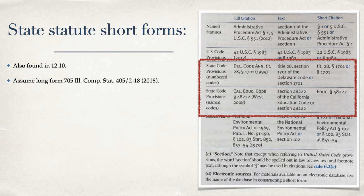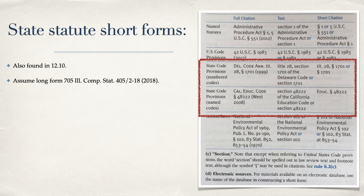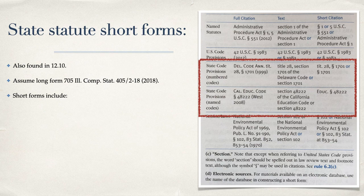Let's assume that our last cite was to 705 ILCS COMP STAT 405 slash 2-18. We could have short forms in a few different forms. What would the cite be if the next sentence was citing the exact same provision, that is, 2-18? Well, that one is easy. It's a simple id, of course.